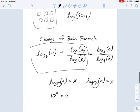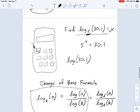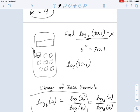So this is how you do evaluations of logarithms using a calculator when they're ugly numbers, like log base 5 of 30.1, or whatever it is.